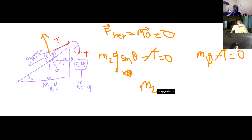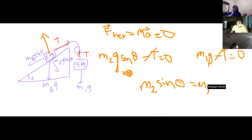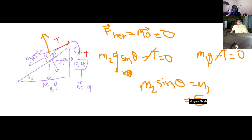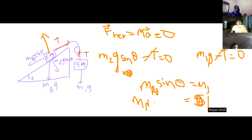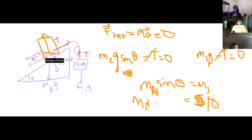Setting them equal: m2·sinθ equals m1. We call the new mass mn. So mn·sinθ equals m1 which is 5. Sine of 30 is one half, so multiply both sides by 2: mn equals 10. We currently have m2 equals 8, so the additional mass we need to add is 10 minus 8 equals 2 kilograms.